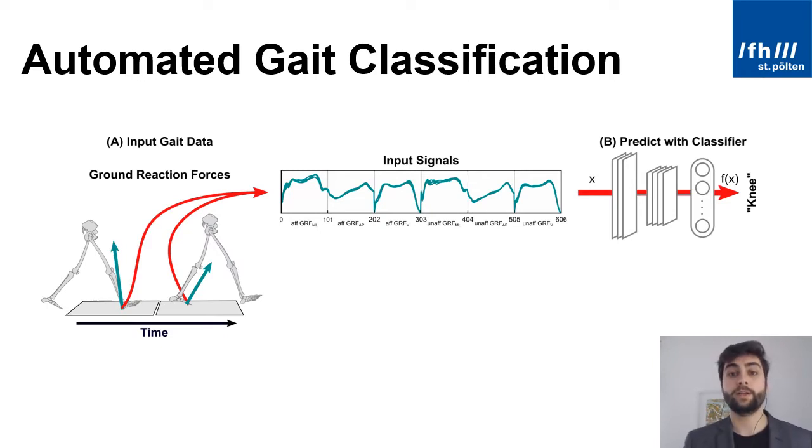However, there is one drawback of state-of-the-art machine learning models and that's their intransparency. So in our example here the model predicts a functional gait disorder at the knee but we don't know exactly why this prediction was made by the model.